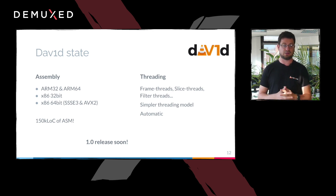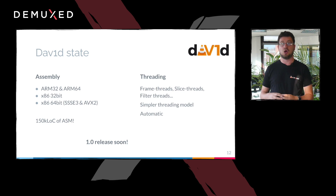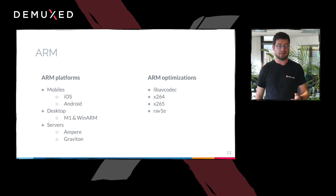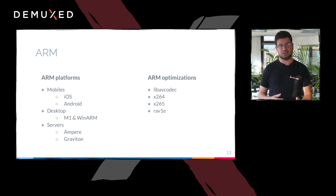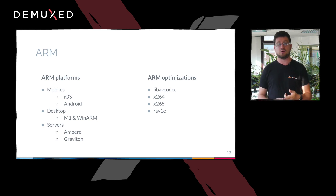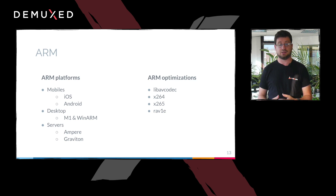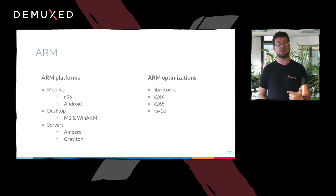This threading work is in the master branch of Dav1d and will be out in the 1.0 release, which is coming soon. We're still fixing a few issues, so please test the pre-release so you can catch any mistakes. With Dav1d 1.0 released, most of the core work on Dav1d will be done, and the next work will focus on other platforms — AVX-512, PPC, and GPU decoding acceleration. You've also seen a big focus on ARM across many projects in the open-source multimedia community, because ARM is now everywhere: iOS, Android, Mac M1, Windows on ARM, and server-side with Ampere and Graviton. There has been a lot of ARM optimization in the past year on libvpx codec, x264, x265, and Rav1e, in addition to the work on Dav1d.